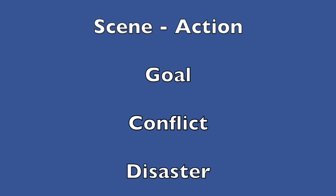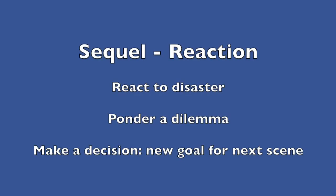The basic idea is that a novel is made up of a series of scenes and sequels. The scene is the action part: the character has a goal, does something to try to achieve that goal, but runs into conflict or opposition so he has to try multiple approaches. The scene ends in some kind of disaster in which the character either definitively fails to reach the goal, or achieves it in a way that makes things worse. Either way, it throws the character off balance. Then the sequel is the reaction part: the character responds to the disaster, has a dilemma about what to do next, and makes a decision that becomes the goal for the next scene.